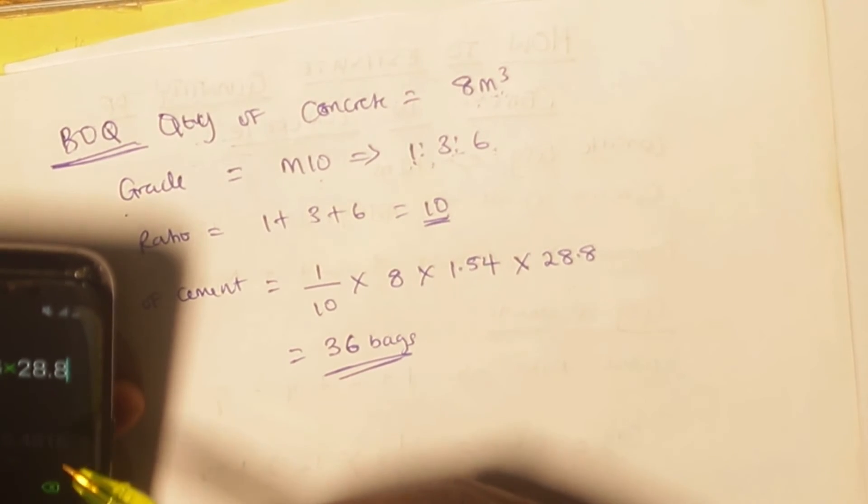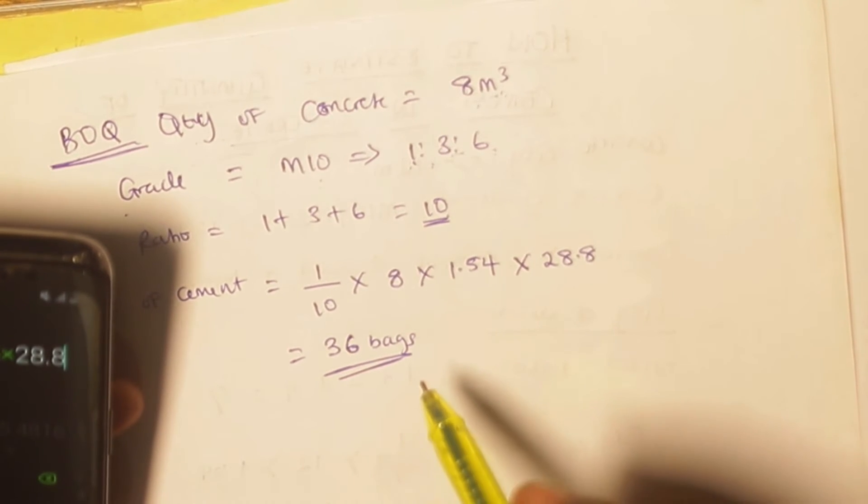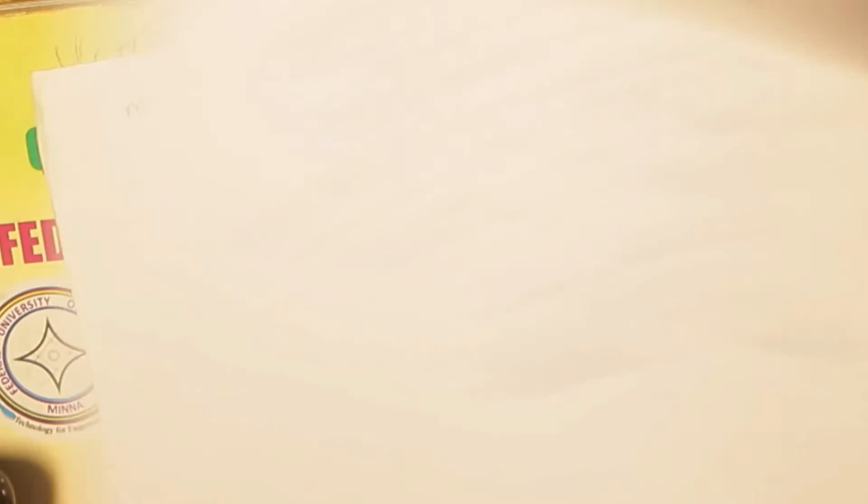I know that it is 35.48 and I cannot round it up, but in this case I'm rounding it up because this value is a little bit higher, so it can just cover up for some kind of wastage that would likely happen on the site. So this is the final calculation. You can see it is not long like the first one.